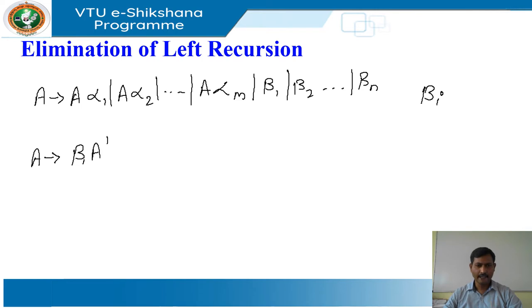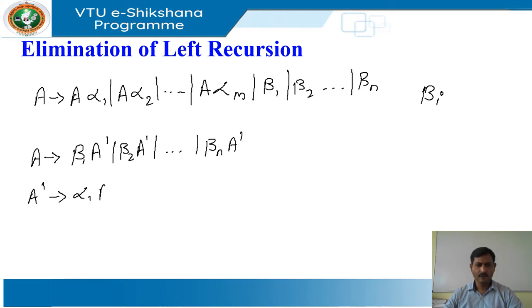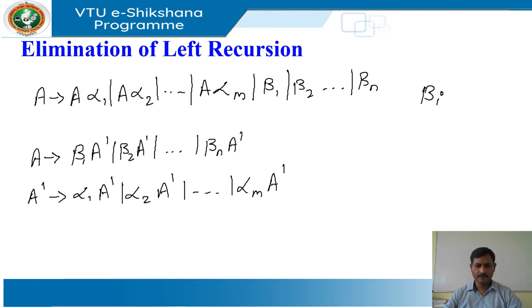Then replace the A productions with: A derives beta1 A' | beta2 A' | ... | betaN A', and A' derives alpha1 A' | alpha2 A' | ... | alphaM A' | epsilon. The non-terminal A generates the same strings as before, but this does not contain left recursion.